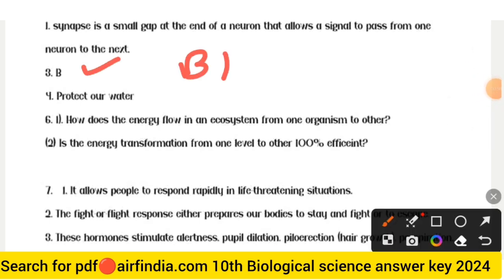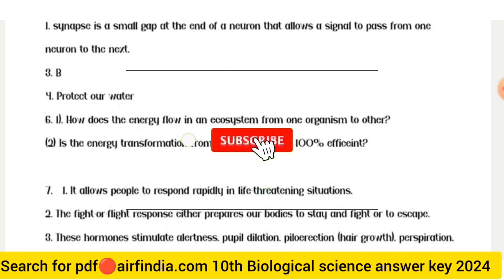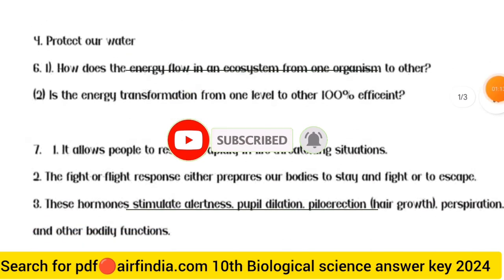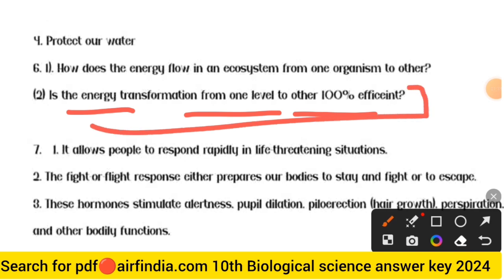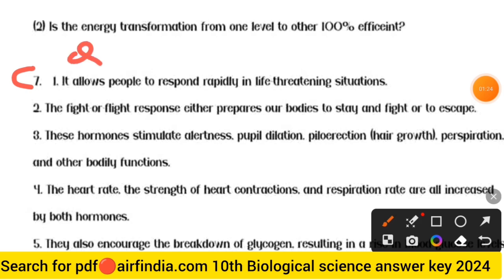Question 3 answer is option B — protect our water. Question 6 answer: Point one — how does the energy flow in an ecosystem from one organism to another. Point two — the energy transformation from one level to another is not hundred percent efficient.